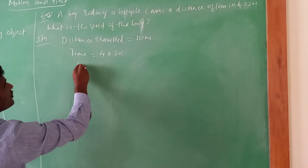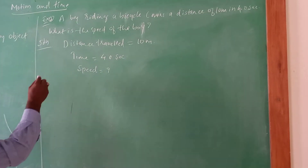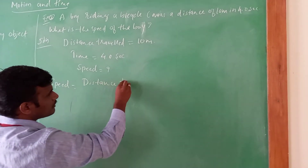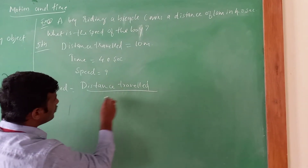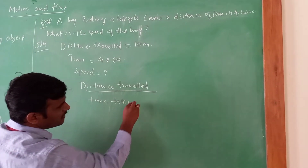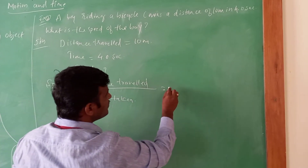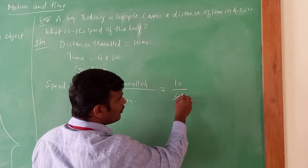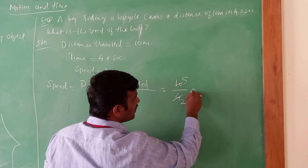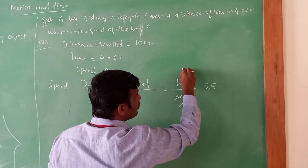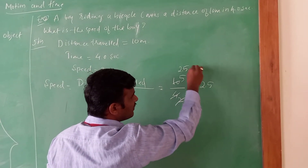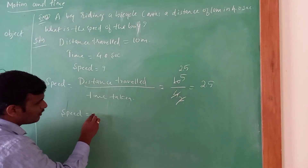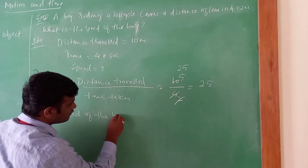So the speed of the boy in terms of metres per minute is 150 metres per minute. We have calculated the speed in both metres per second and metres per minute. To calculate speed, we require any two quantities — if we know distance and time, we can very easily calculate speed using the formula.